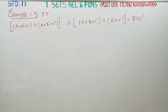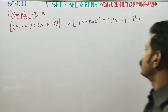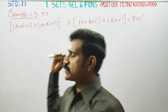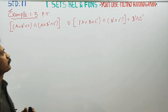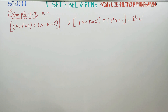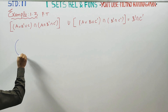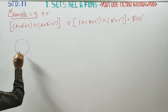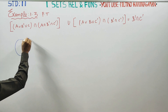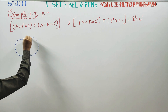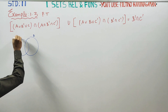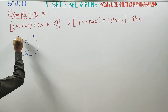Dear 11th standard students, in example 1.3, you have to prove this one. Before entering into this problem, a small idea: this is my A set, this is my B set. Remember the basic ideas about union and intersection.